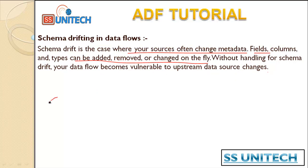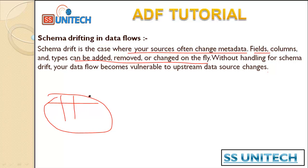Let's assume we have source data that is going to change very often. For example, previously we had only two columns and after the first execution, the next time a file is received it has three columns. Or in the second case, if your file in the first execution has three columns, in the second execution it will have only two columns. Such changes in data or data type changes need to be handled using the schema drifting option inside the data flow.